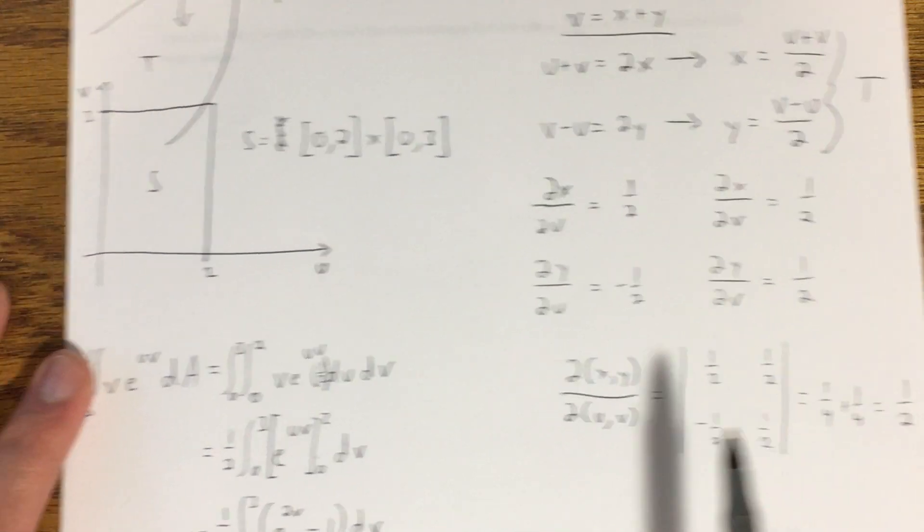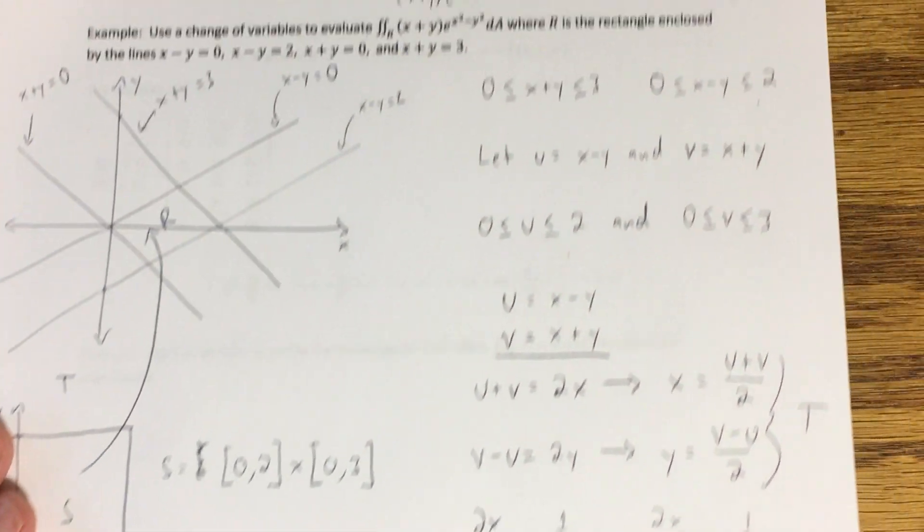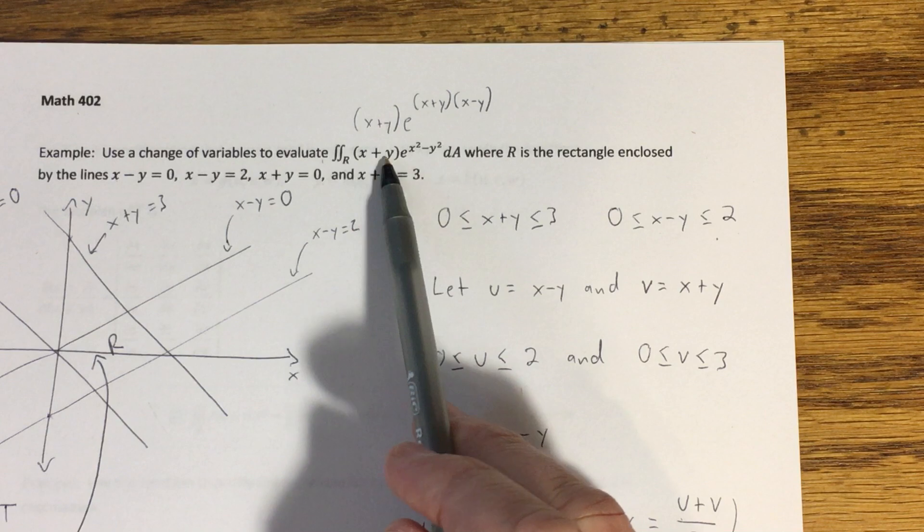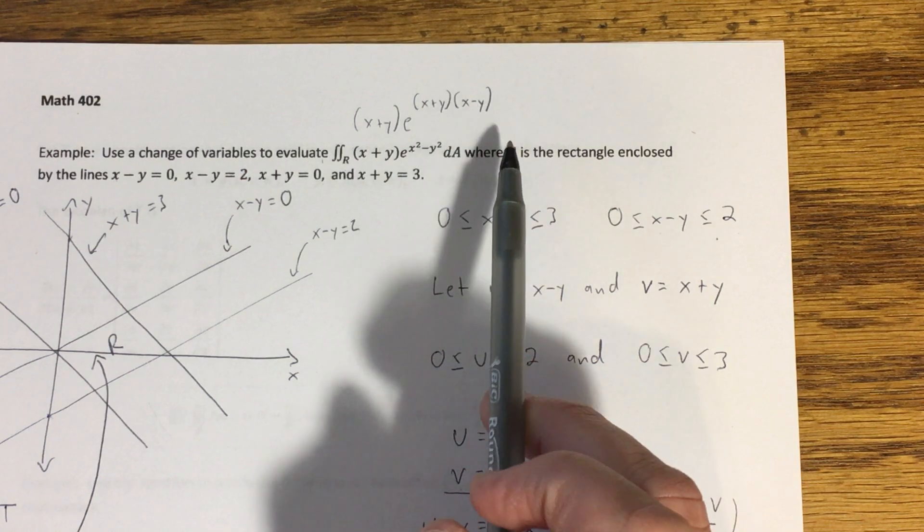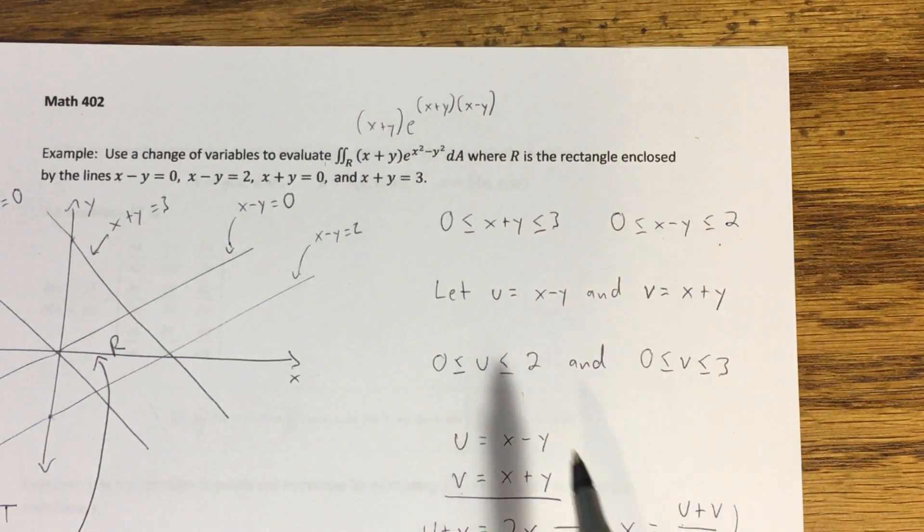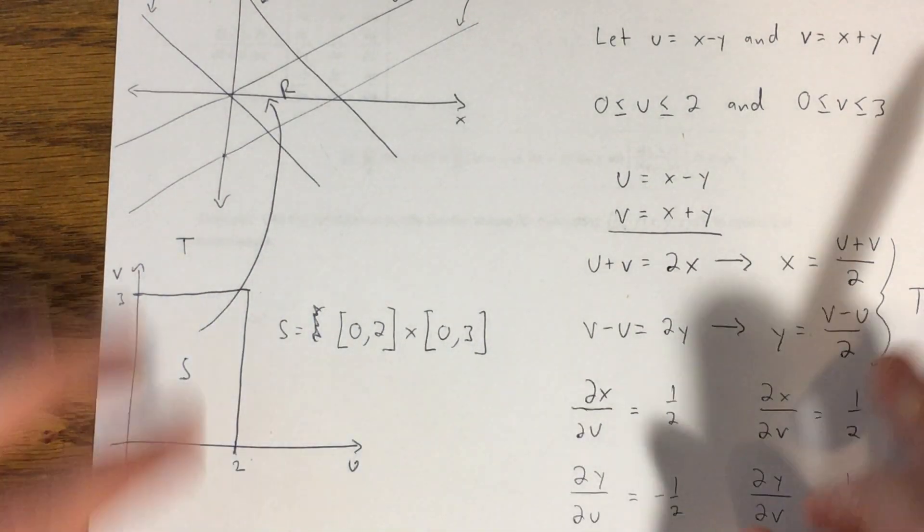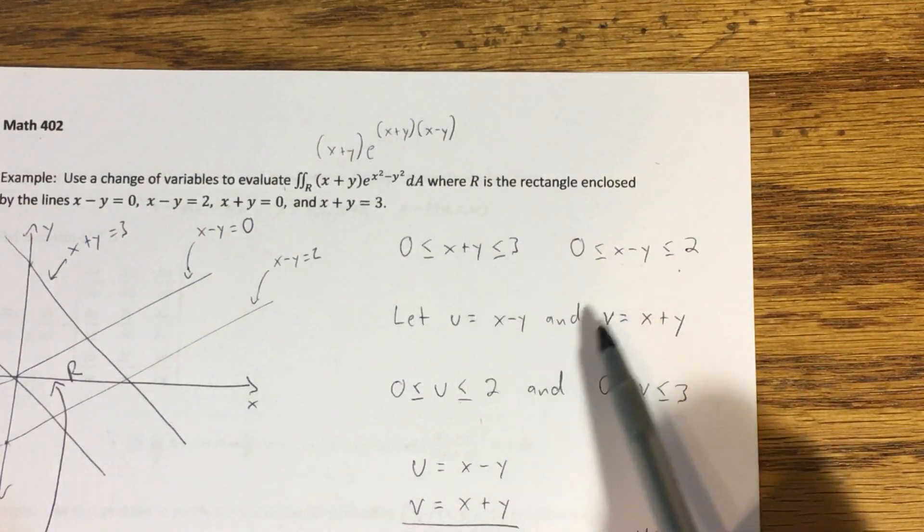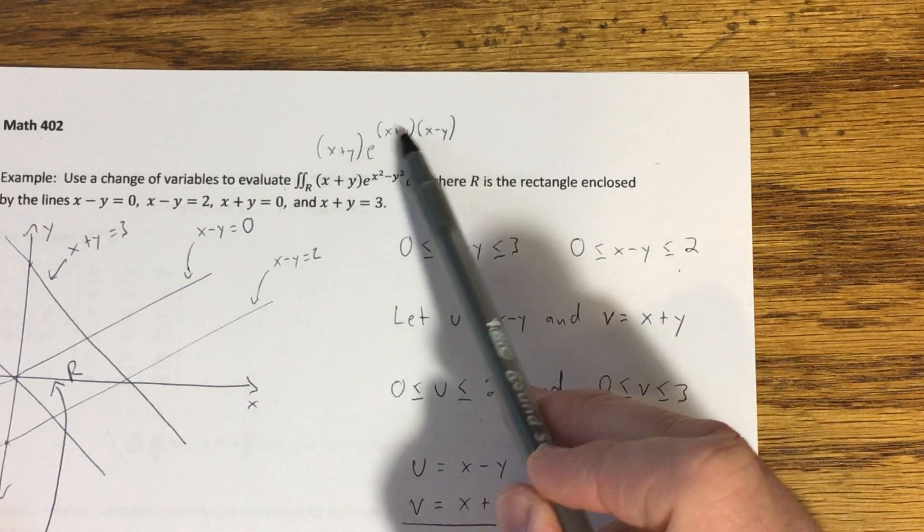So what I did is I came over here and I made a change of variables. If we come back up and look at the original integral, we're integrating over this region R and the integrand is X plus Y times E to the X squared minus Y squared, which can be factored to X plus Y X minus Y. This is convenient because not only did our change of variables give us a simpler rectangle to work with in the U-V plane, but it's actually going to make our integrand look a lot simpler. Remember U was defined to be X minus Y and V was defined to be X plus Y, which we're seeing both of those show up in this integrand.